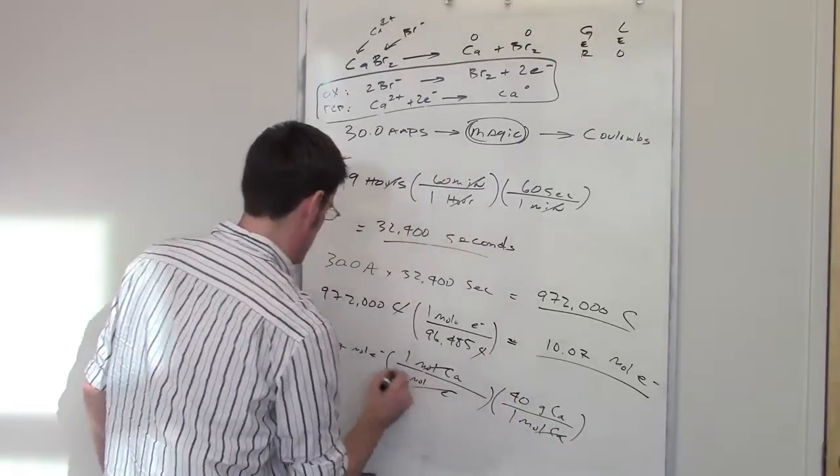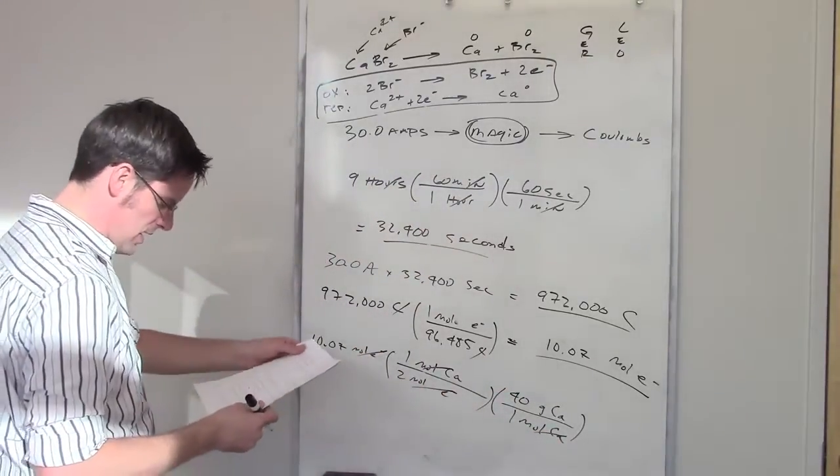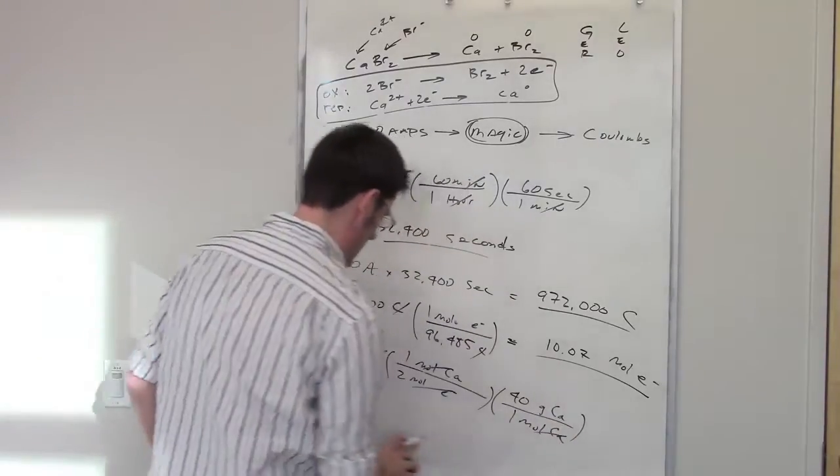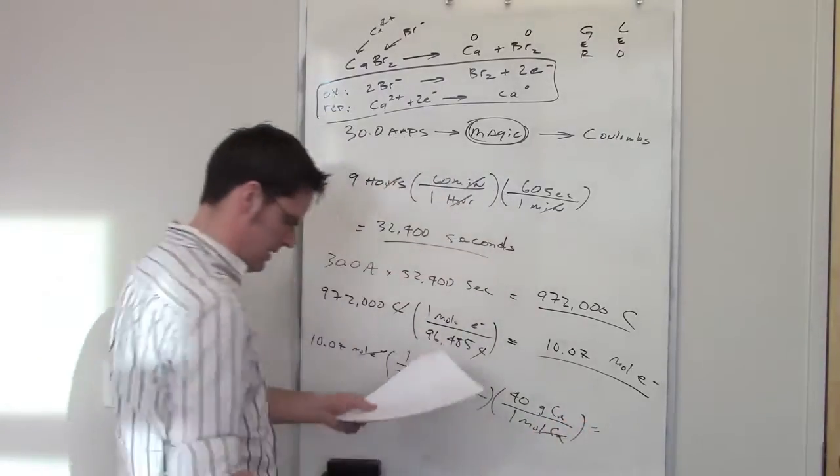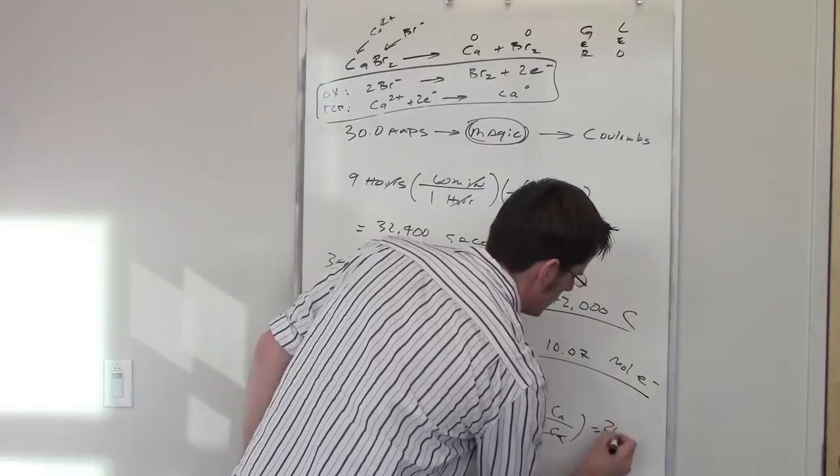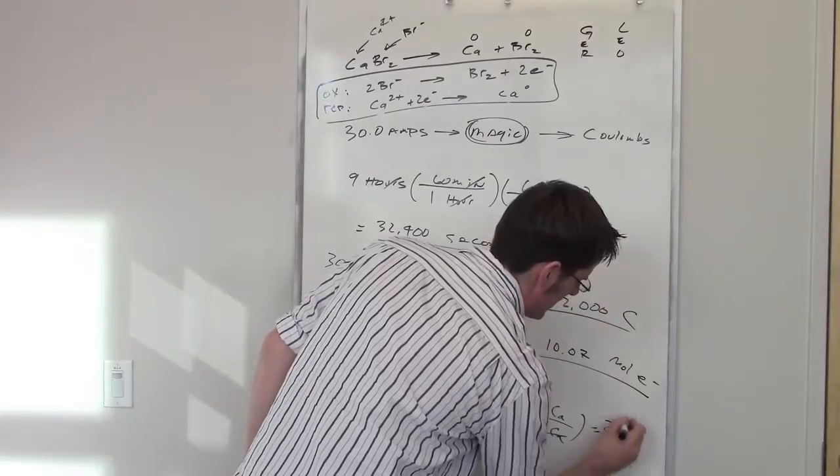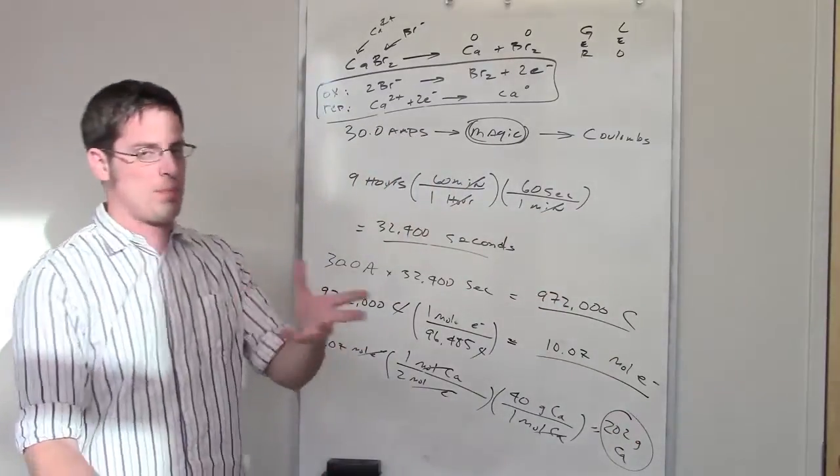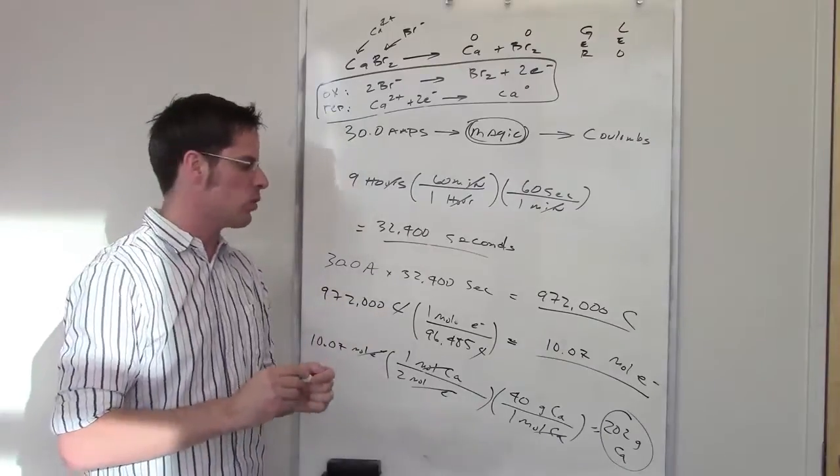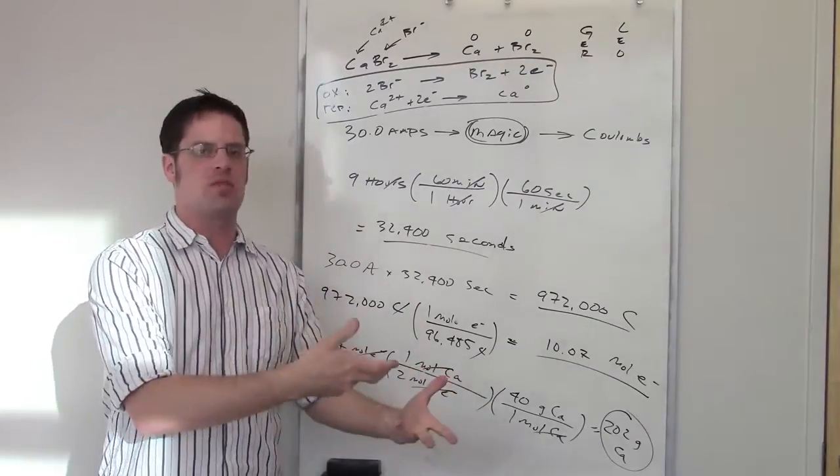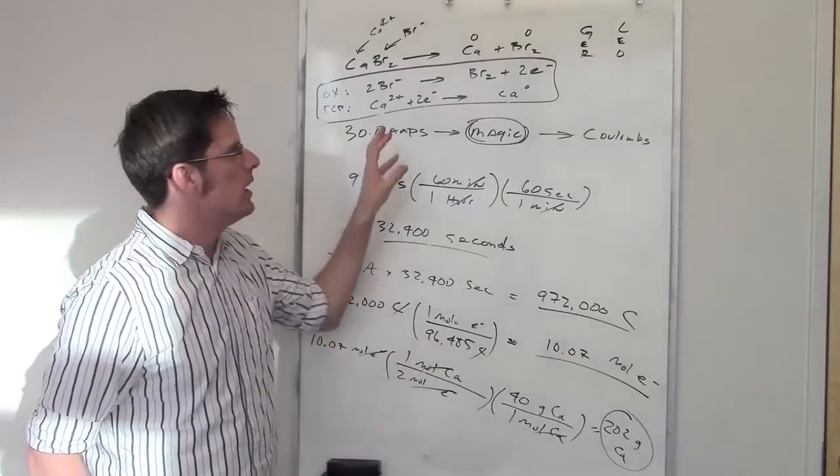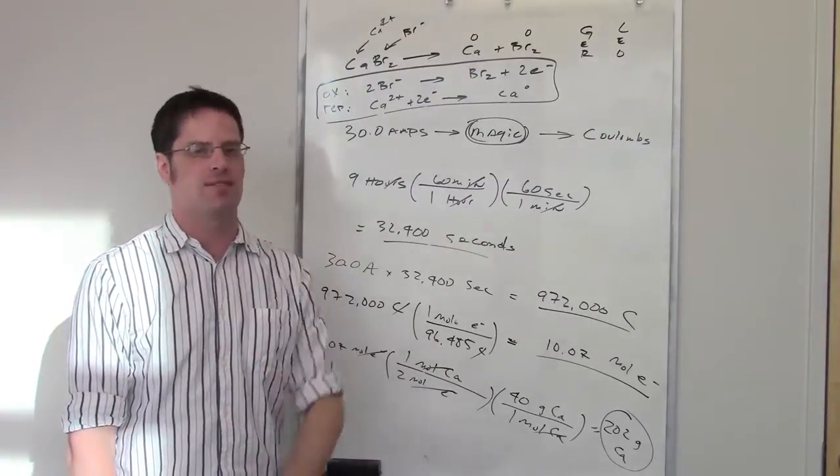So moles of calcium cancel each other out. Moles of electrons cancel each other out. And I'm left with the total number of grams of calcium, which when I threw that in my calculator came out to be about 202 grams of calcium. So that is the way or the process by which you would calculate the number of grams of something that's produced when you throw a bunch of amperage through a redox reaction for a certain period of time.